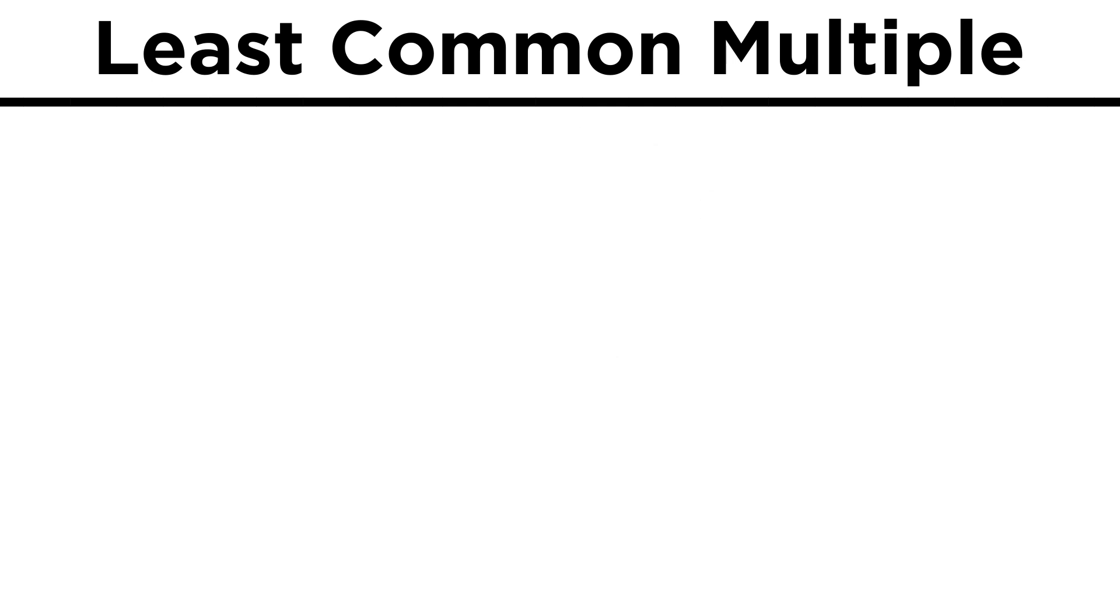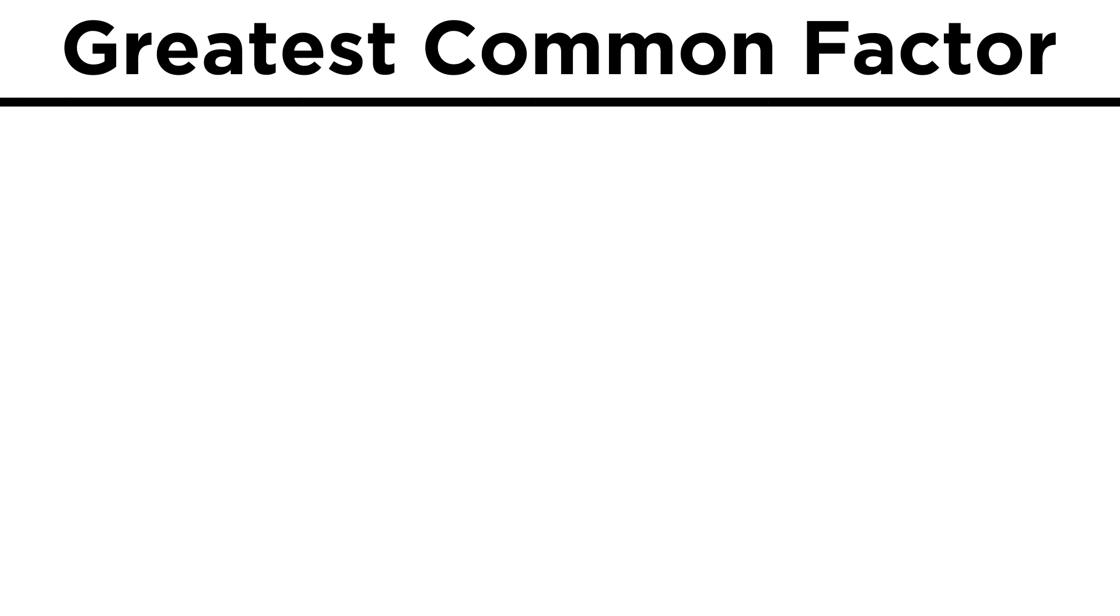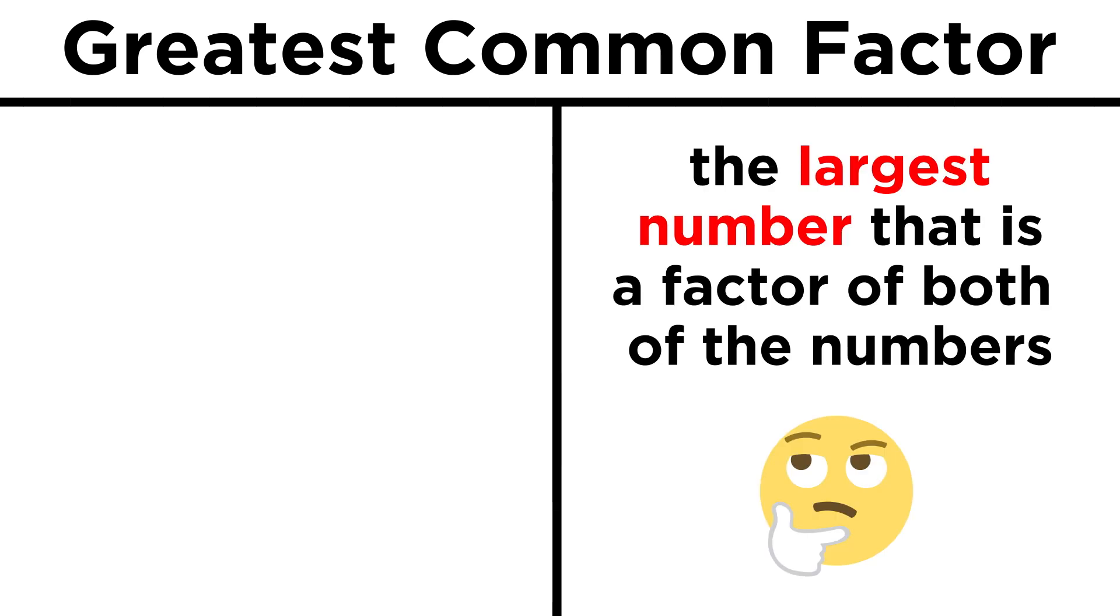We just learned about least common multiples. These can be found when comparing two numbers and finding the smallest number that is a multiple of both of them. By the same token, we will want to be able to identify the greatest common factor of two numbers. As you might be able to guess, this is the largest number that is a factor of both the numbers.